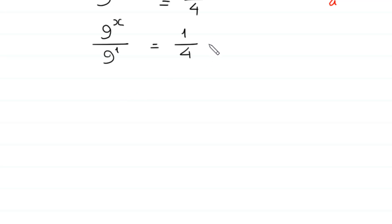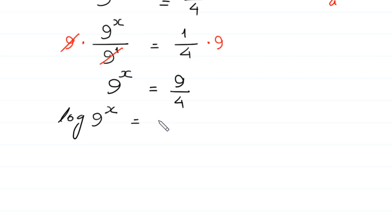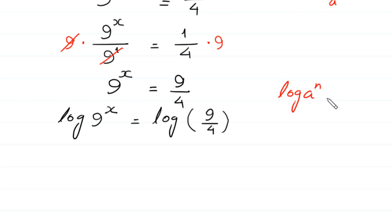Next, we multiply both sides by 9. The 9 cancels on the left, leaving 9 to the power x equal to 9 over 4. Now we take log of both sides: log of 9 to the power x equals log of 9 over 4. According to log property, log of a to the power n is equal to n times log of a.